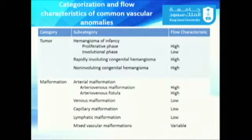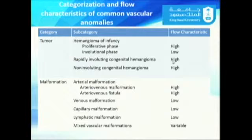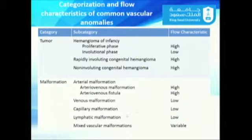Categorization based on flow characteristics: infantile hemangioma in the proliferative phase is high flow; in the involutional phase, it's low flow. Rapidly involuting congenital hemangioma and non-involuting congenital hemangioma are both high-flow tumors. For malformations: arterial malformation is high flow; venous malformation, capillary malformation, and lymphatic malformation are all low flow. Mixed vascular malformations have variable flow depending on which vascular channels are involved.